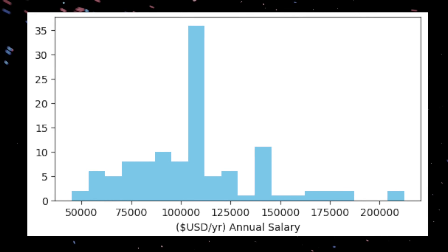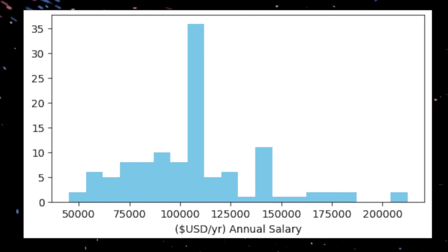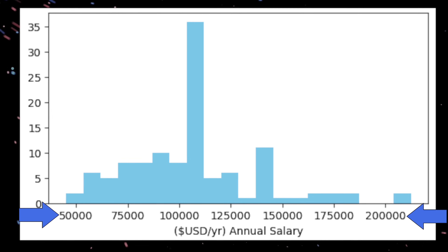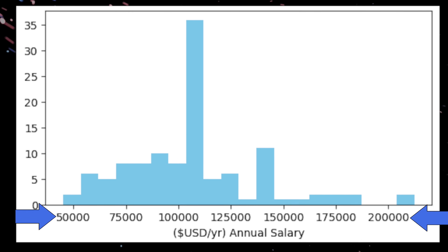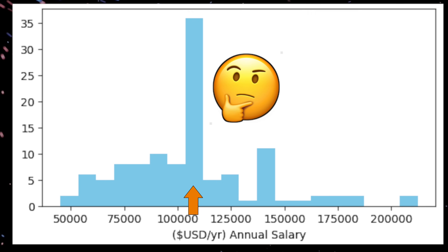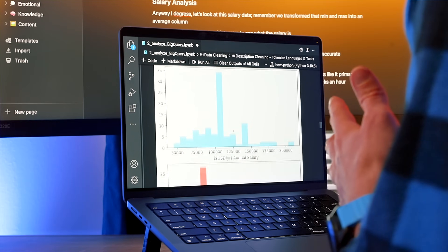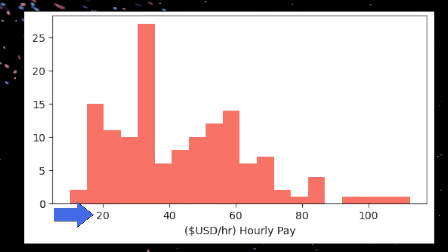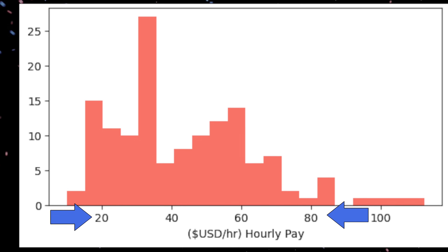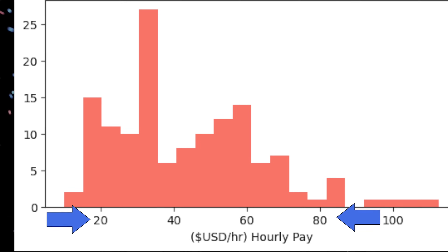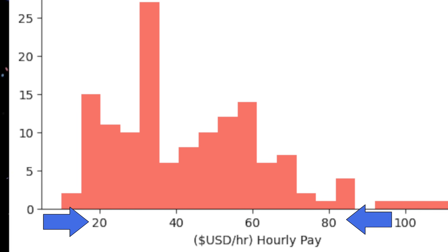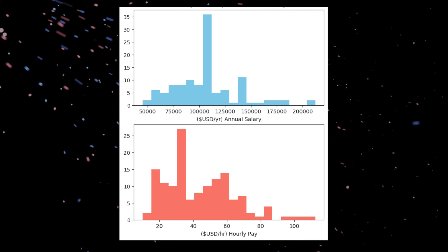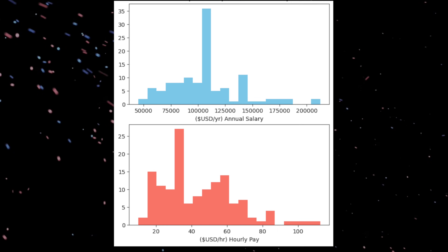Looking at salary statistics, this histogram shows salaries distributed between $50,000 and $200,000 with a high clumping around $100,000. For hourly pay, it ranges from $20 to $80 — the majority of those postings came from Upwork, which is a freelance site. For both salary plots, this includes not only entry level but also those with more experience, which is why the range is so wide.